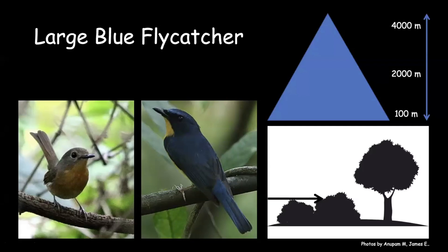Large blue flycatchers are found in undergrowth and lower part of the tree, but also go slightly higher in elevation compared to hill blue flycatcher. Hill blue flycatcher is more common around 700–800 meters, while large blue flycatcher is slightly higher. Both can be found in bamboo as well, but mainly in dense undergrowth.